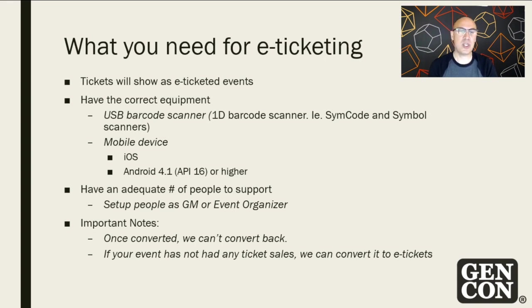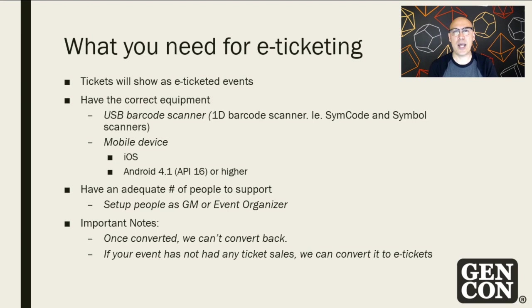You're going to need the right equipment — either a USB barcode scanner or a mobile device. If you're using a barcode scanner, you need one that accepts Code 39 (three of nine) barcodes, which look similar to UPC barcodes — the same type you see on Gen Con badges. Gen Con uses Symbol scanners; Simcode is another option. You can find them on Amazon for anywhere between $20 and $70. The higher-end ones tend to work really well.